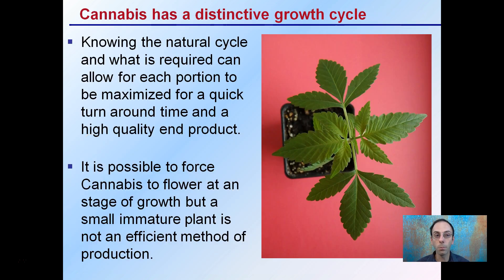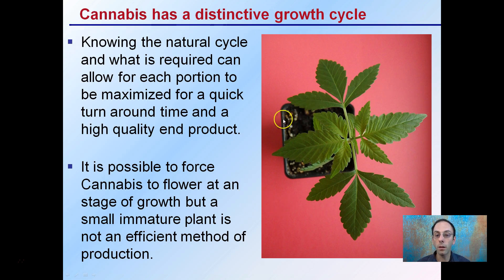Cannabis has a distinctive growing cycle. Knowing the natural cycle and what's required allows each portion to be maximized for quick turnaround time and a high-quality product. It's possible to force cannabis into flower at any stage of growth, but a small, immature plant forced into flower would not be an efficient method of production. Developing this understanding of the natural growth cycle allows growers who have control over photoperiods to maximize the yield per plant, keeping costs down and yields high.